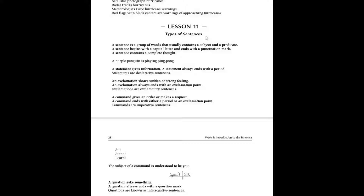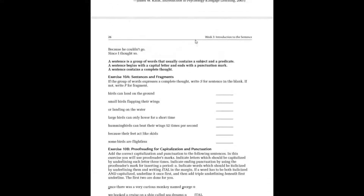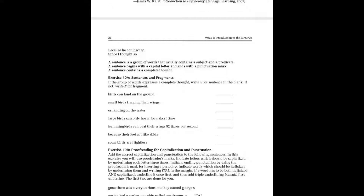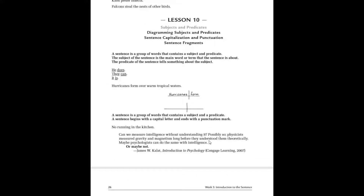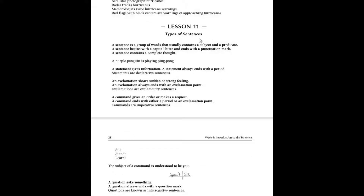Grammar for the Well-Trained Mind, we're on lesson 11 today, so you want to make sure and have your page out in front of you. Today we're going to talk about types of sentences. Yesterday we talked about sentences and fragments, proofreading, capitalization, punctuation, and the different proofreading marks we learned about. We also learned about how to diagram a subject and a verb, or subject and a predicate.